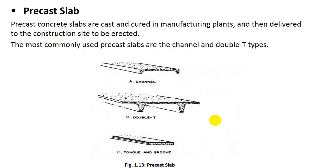Precast slab — this type of slab is constructed in advance and then placed at the time required. Precast concrete slabs are cast and cured in manufacturing plants and then delivered to the construction site to be erected. The most commonly used precast slabs are channel slab, double-T slab, and tongue-and-groove slab.